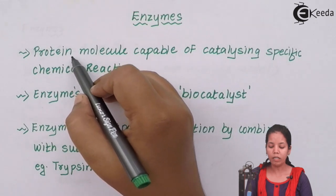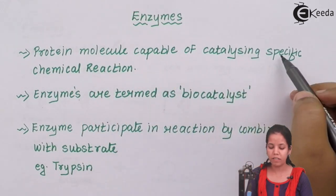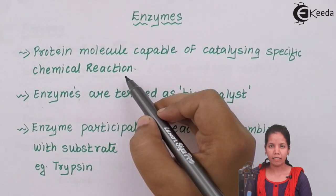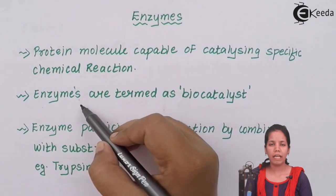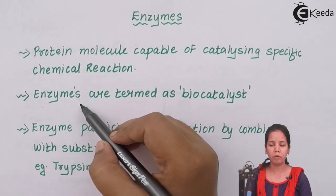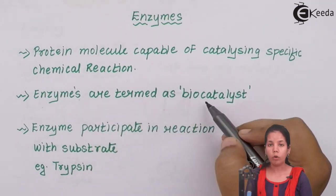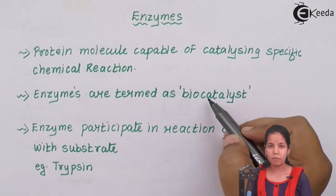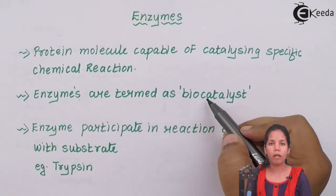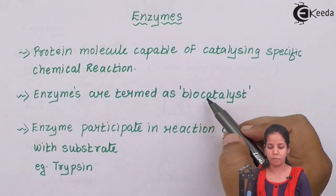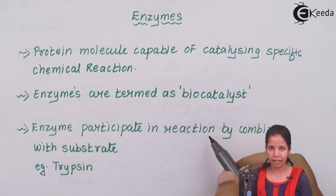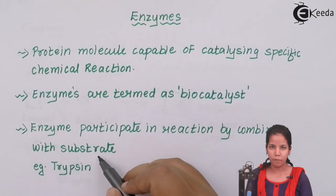Enzymes, they are protein molecules capable of catalyzing specific chemical reaction. When I say catalyzing, it means speeding up the reaction. Basically, majority of the enzymes are proteinaceous in nature or they are made up of amino acids, small building blocks of proteins. Enzymes are termed as biocatalyst. Bio means biology and catalyst means a biomolecule that helps us to speed up chemical reactions in biochemical system, which could be a human system. Enzymes participate in reaction by combining with substrate. An example of an enzyme would be trypsin.